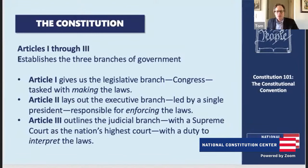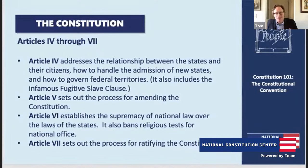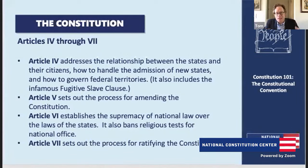The rest of the Constitution gives us a few other important details. Article 4 addresses the relationship between the states and their citizens, dealing with admission of new states and governing federal territories — it also includes the infamous fugitive slave clause. Article 5 is the process for amending the Constitution; the founders didn't think they had a monopoly on constitutional wisdom and expected us to make it better over time. Article 6 establishes the supremacy of national law over state laws. Article 7 sets out the ratification process, where state by state the American people had to say yes or no to the new Constitution — a deep expression of the founders' commitment to popular sovereignty.